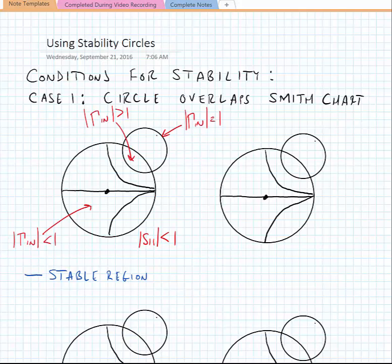Now remember our basic condition for stability was that S11 is less than one, and that gamma_in is less than one. The stability circle represents the boundary where gamma_in is exactly equal to one.